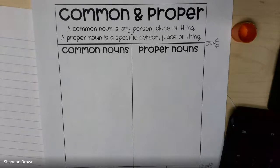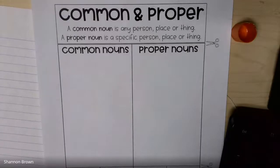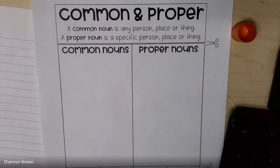Those are the common nouns, but then a proper noun would be the specific name of just a basic noun. So for example, restaurant is a common noun, so then a proper noun for restaurant would be McDonald's, Olive Garden, or El Salto. Those are actual specific names of nouns. Something special about proper nouns is that they are always going to be capitalized.